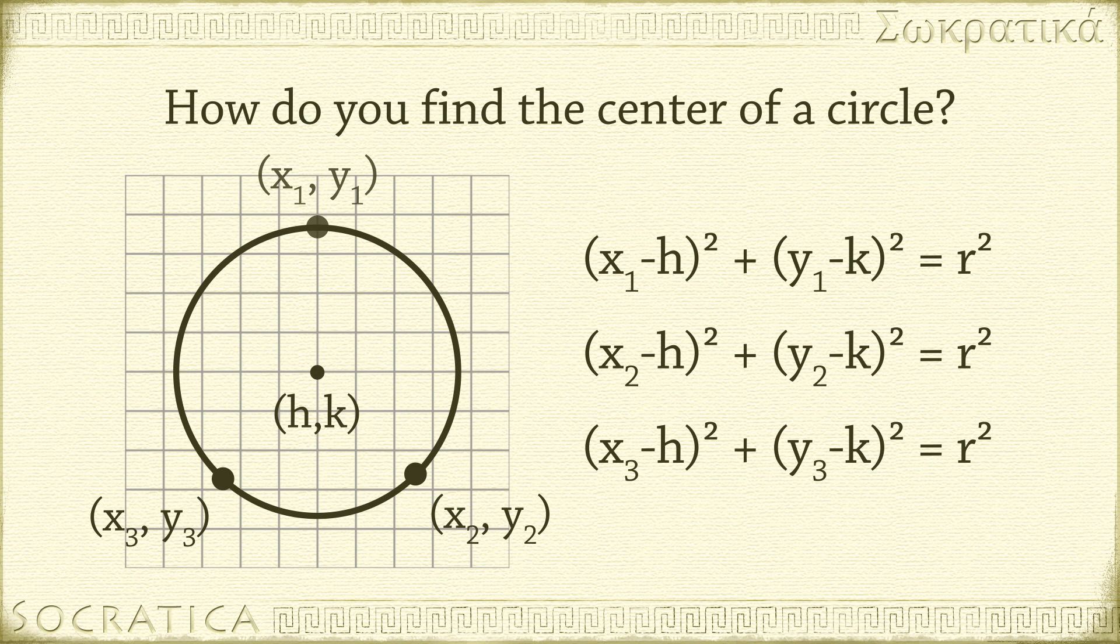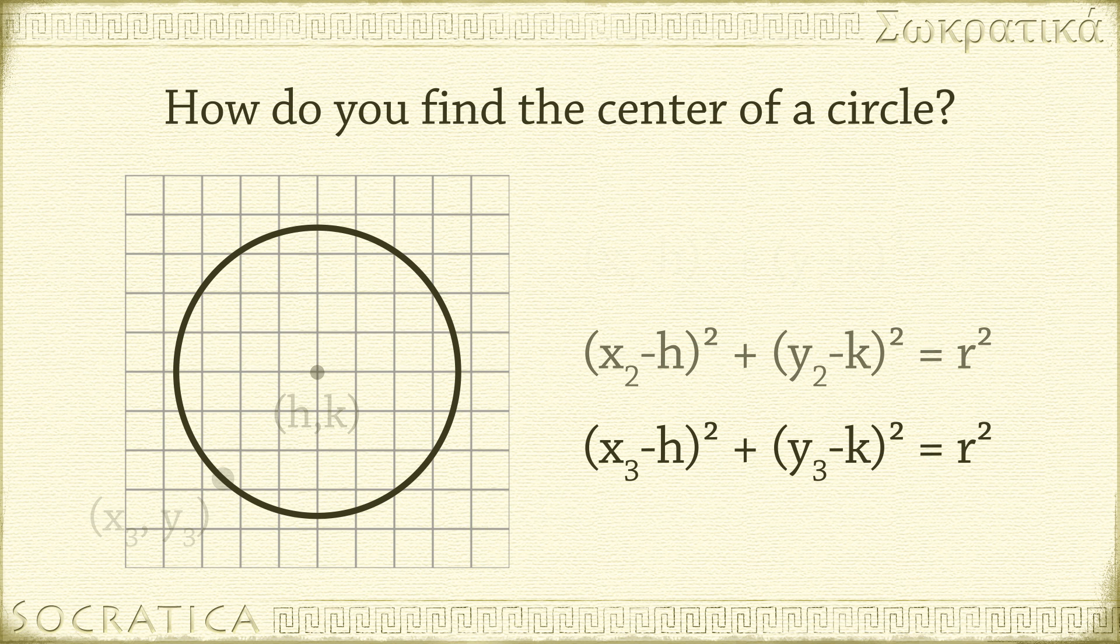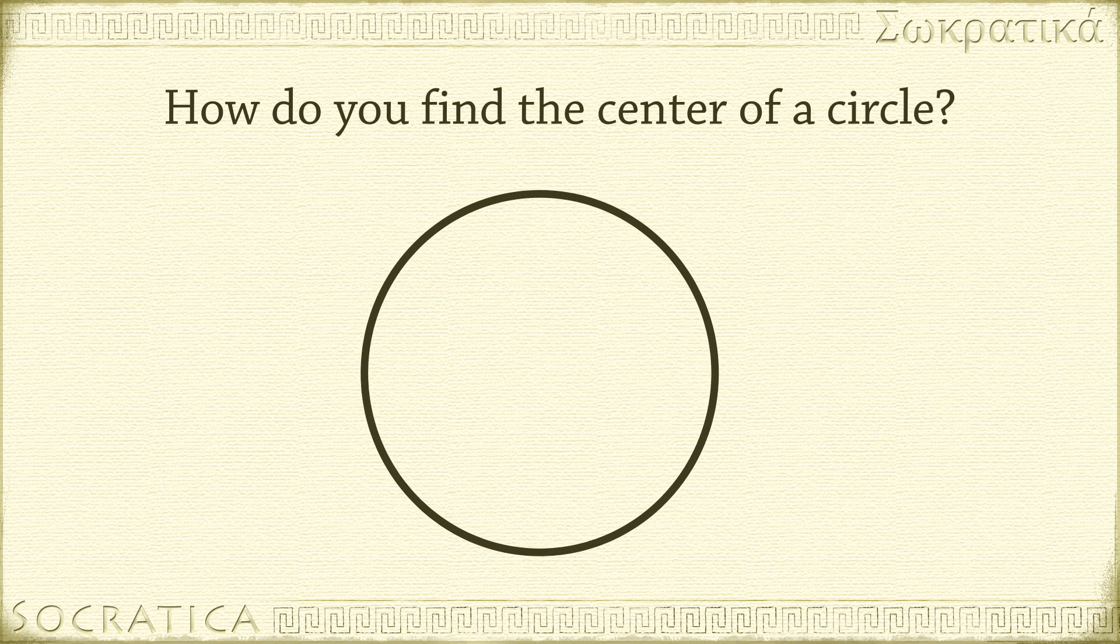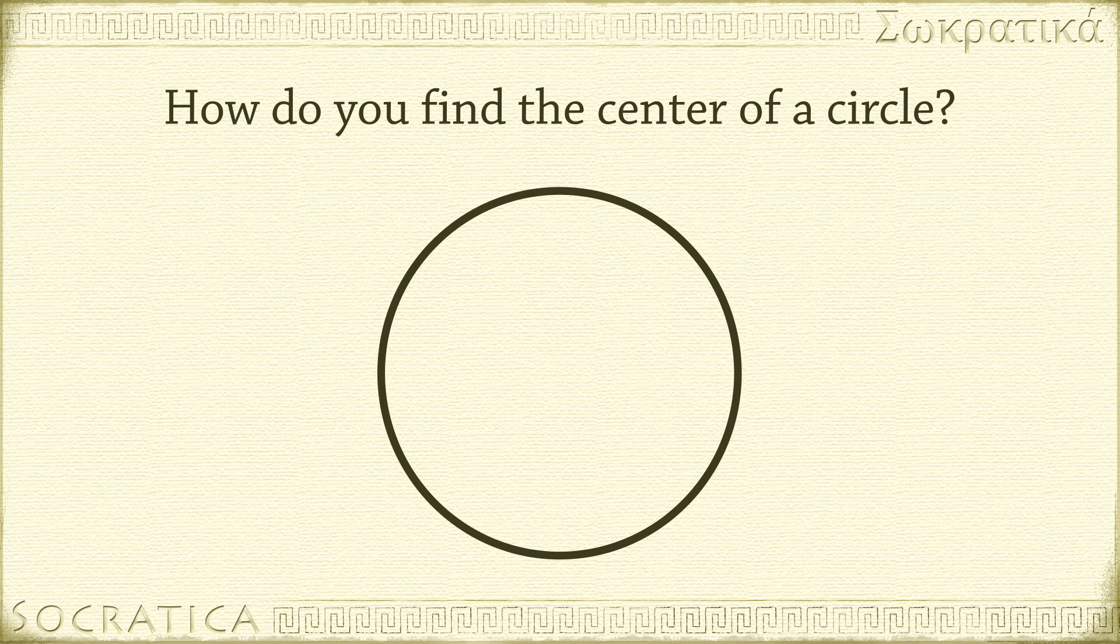But here, we only have a circle. We don't know the coordinates of any point on the circle. This may seem like a pretty hopeless situation, and it is if you try to use analytic geometry to find the center of the circle. But you can do it using Euclidean geometry. And here's how.